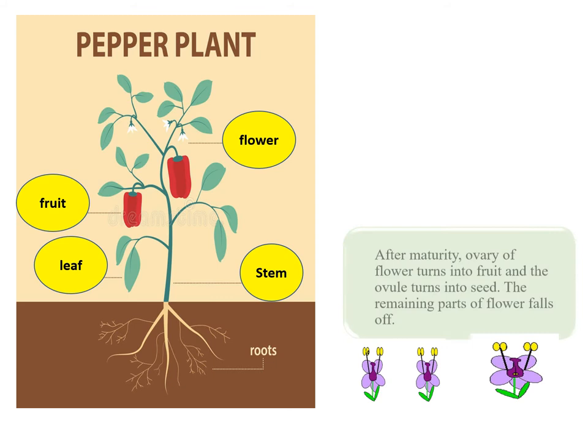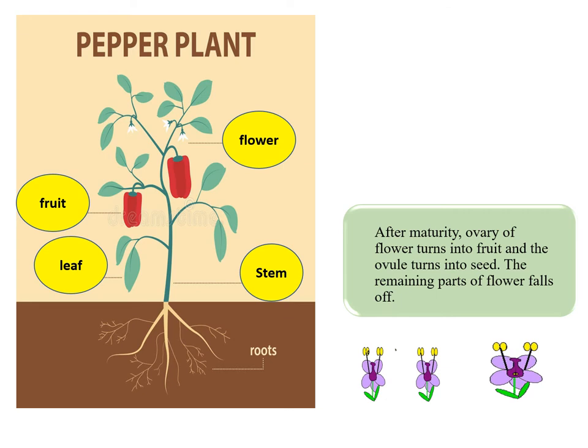After maturity, the ovary of the flower turns into fruit and the ovule turns into seed. The remaining part of the flower, such as the petals, falls off. This red circle is showing you the ovary which converts into fruit.